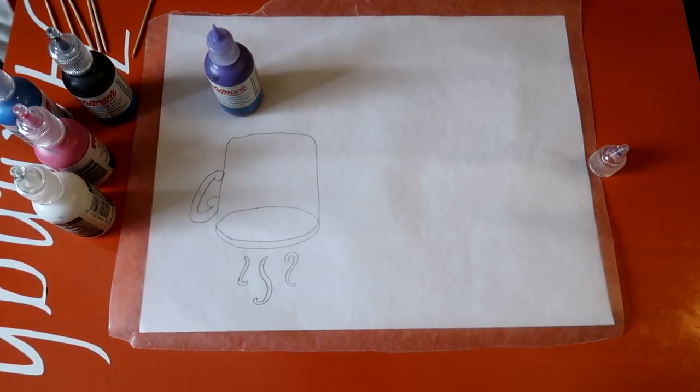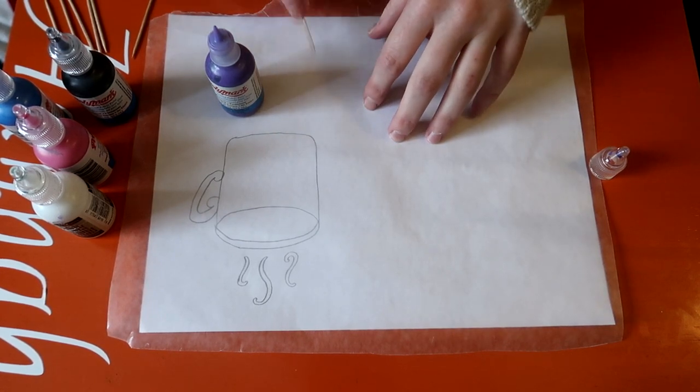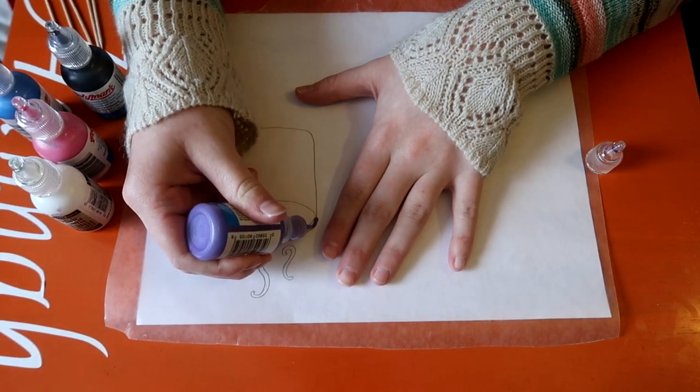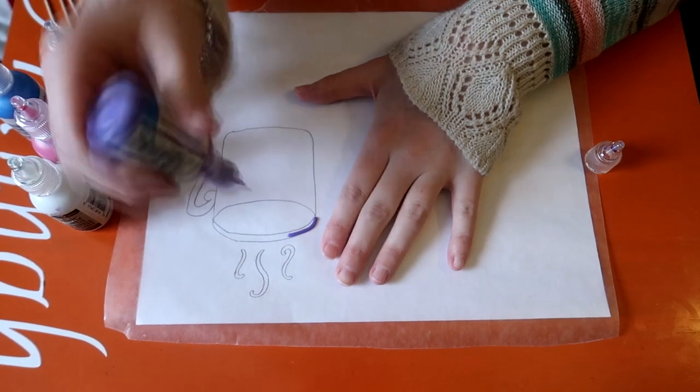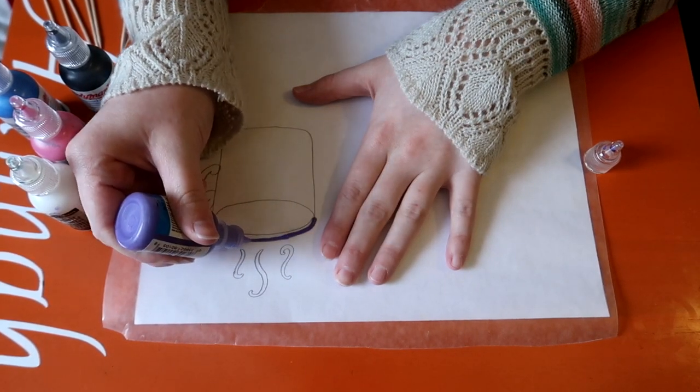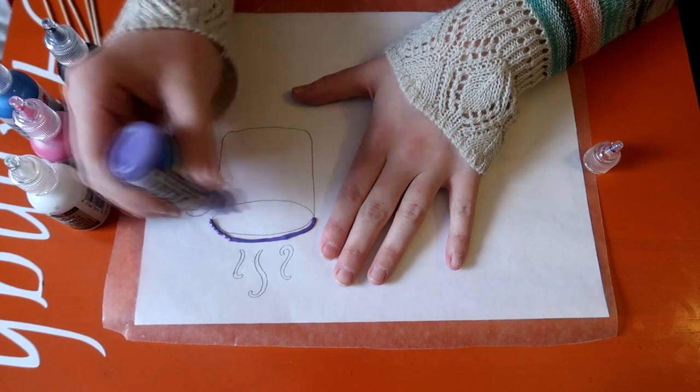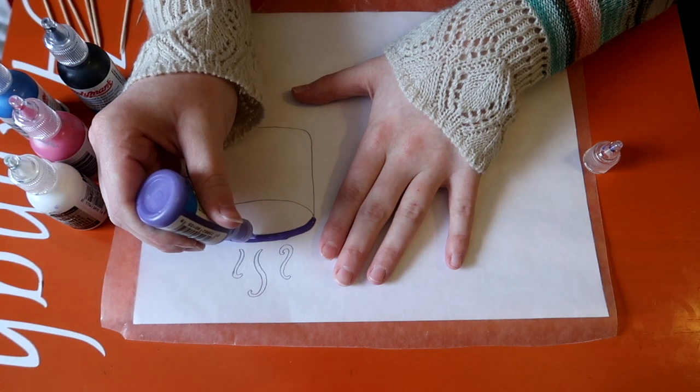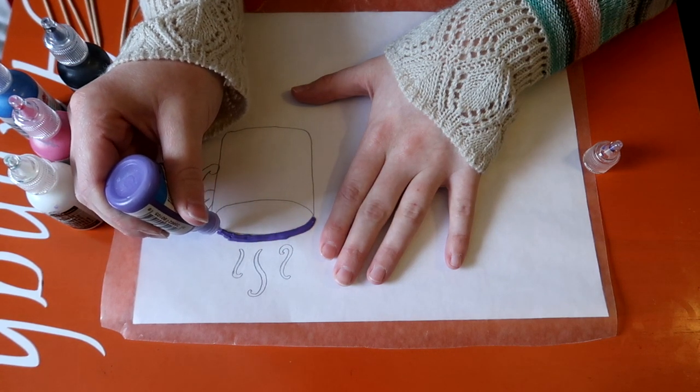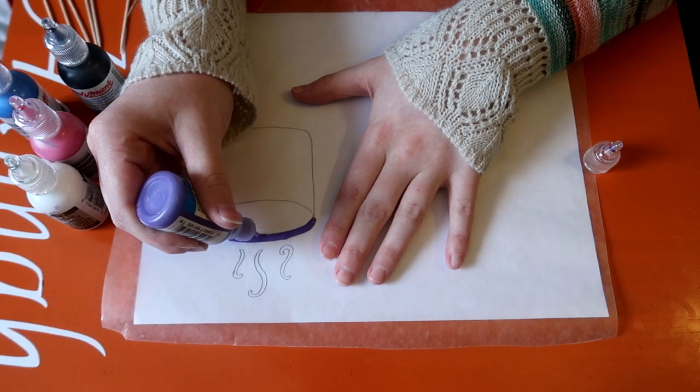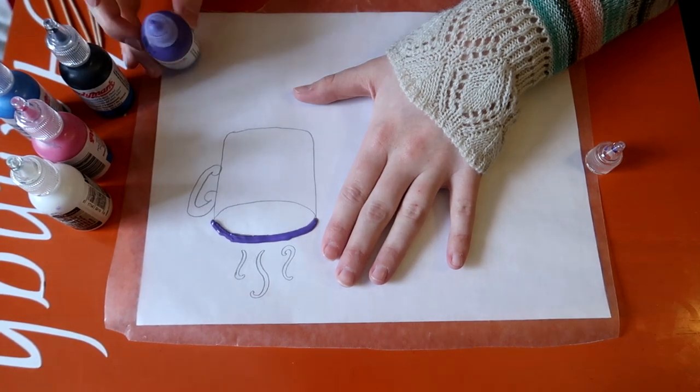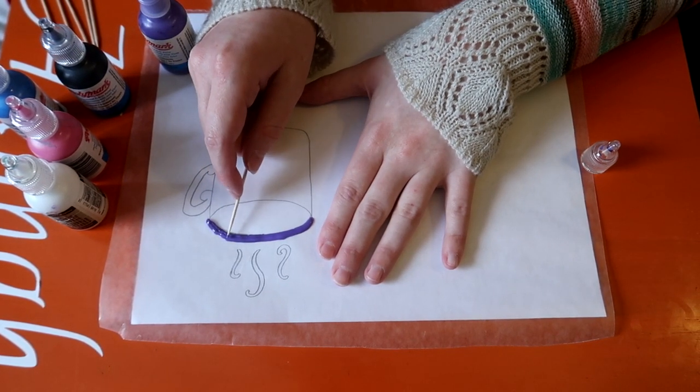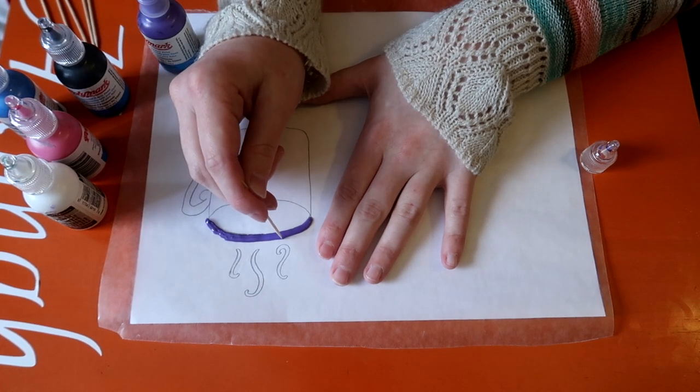And you also can use toothpicks to smooth out the fabric paint over your drawing. And then you take your toothpick and just simply smooth out those gaps in between some of the paint and straighten it out.